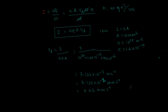Why is such a slow movement able to pass 5 coulombs of charge per unit time? Because the number of electrons is so enormous that even at this small speed, so much charge passes through. If n goes down, vd has to compensate to maintain the same current. Similarly, if the area A becomes smaller, vd has to go up, because fewer electrons are passing through the cross-section.